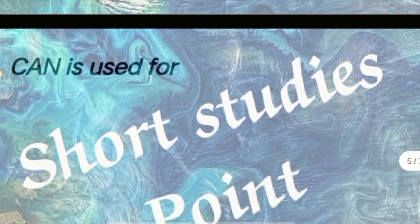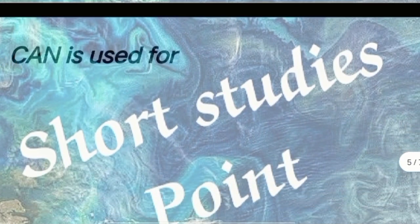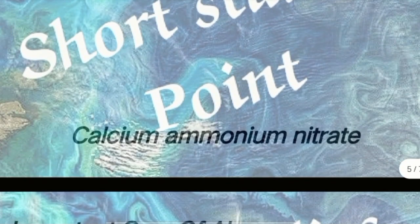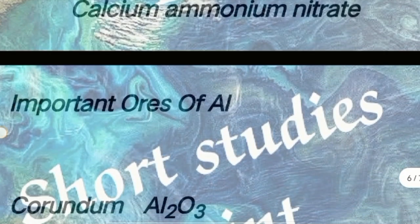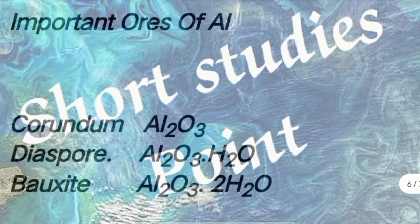Next question: CAN is used for. Answer: Calcium Ammonium Nitrate. Next question: Important ores of Al. Answer: Corundum (Al2O3), Diaspore (Al2O3·H2O).